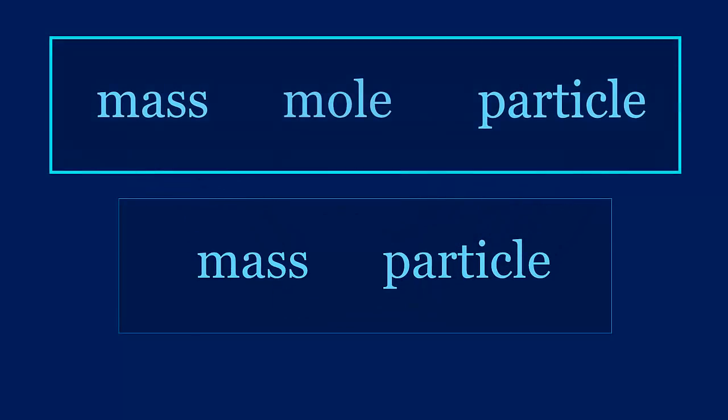So knowing the previous four conversions gives us access to converting to and from mass and particles. The connection between the two, as we have seen, is through moles. A mass to particle conversion is actually a mass to mole to particle conversion. And a particle to mass conversion is actually a particle to mole to mass conversion. Let's look at two examples.